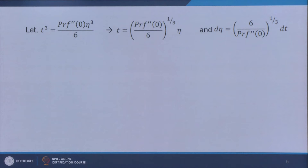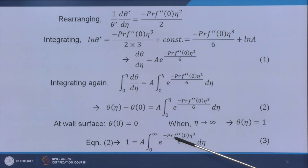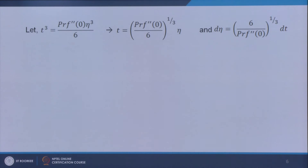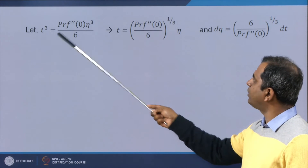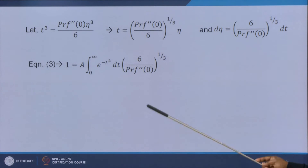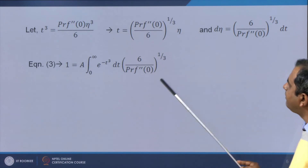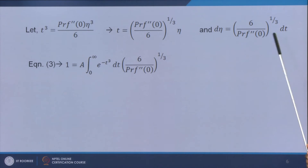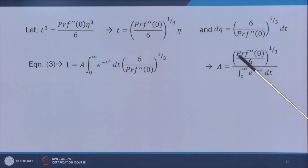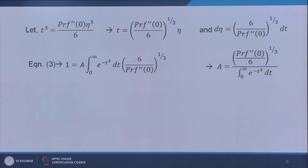To simplify, we substitute t³ = Pr·f''·η³/6, so dη = (6/(Pr·f''))^(1/3) dt. After the substitution, the constant a becomes (Pr·f''/6)^(1/3) divided by ∫₀^∞ e^(−t³) dt.